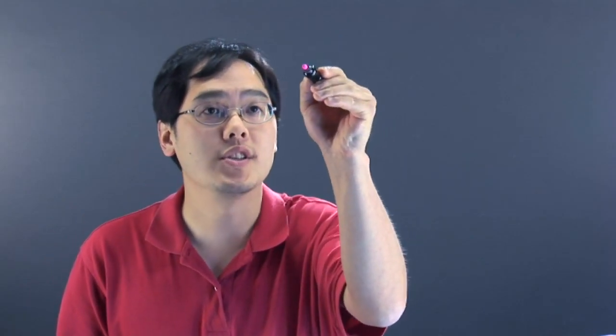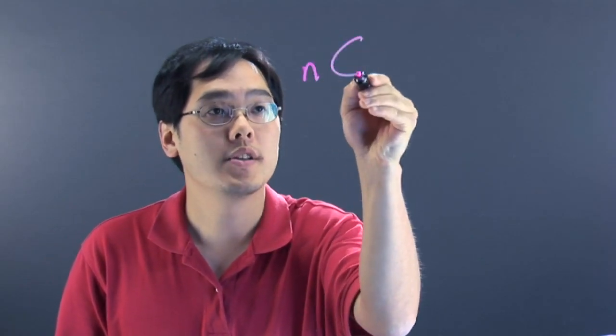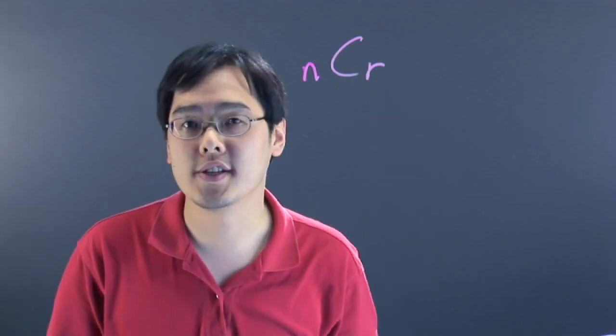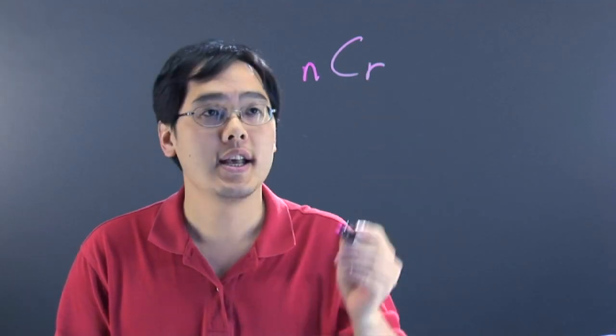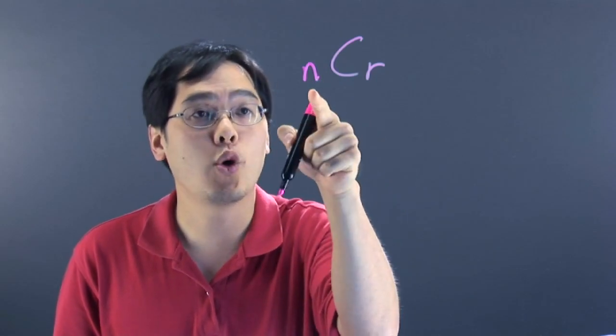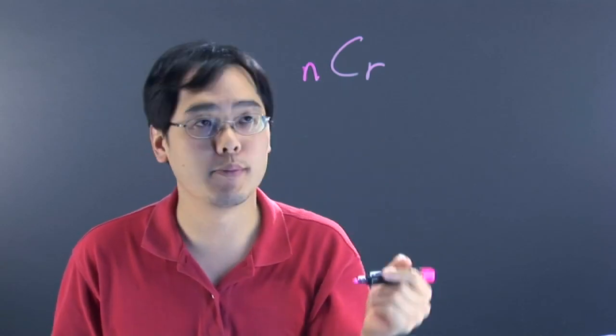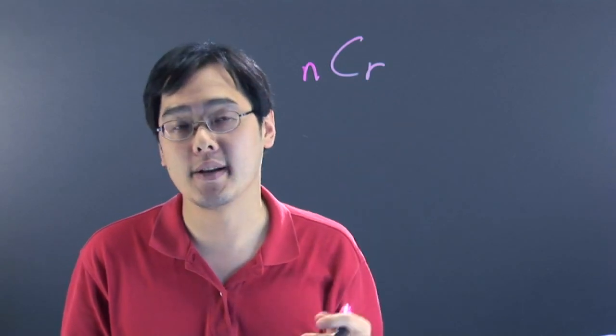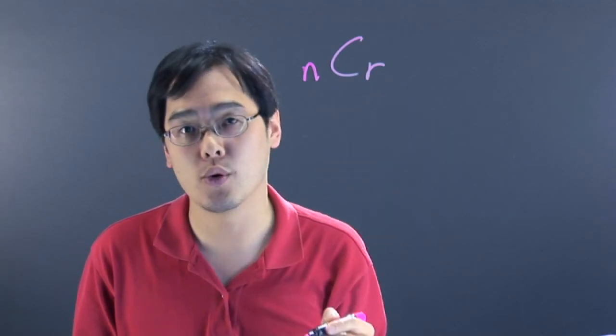Now the notation for combinations is sometimes more often than not denoted by NCR. Now C is for combinations. N is the total number of items you have available, and R is the number of items that you're picking from this particular total.